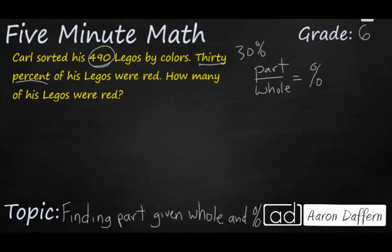In a problem like this, we're going to be given two of these, and we need to find the third. So let's go ahead and fill this out. He sorted his 490 Legos, that is his total number of Legos, so that is the whole. I'm going to write that right here, 490 Legos.